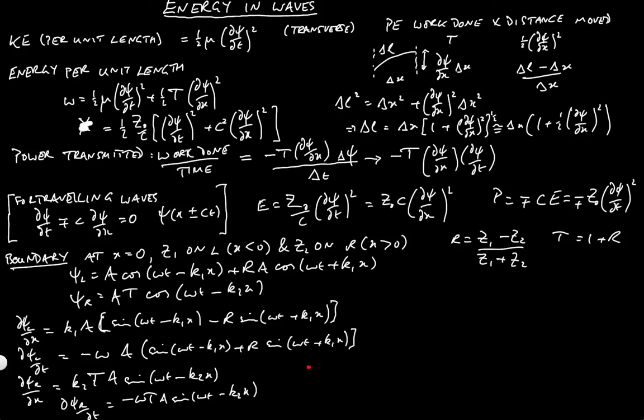We need the power to be conserved. In other words, the power transmission from left and right should be the same at x equals zero. Now, if you calculate that, you can calculate the power on the left pl as equal to z1 c1 a squared k1 omega 1 minus r 1 plus r sine squared omega t.